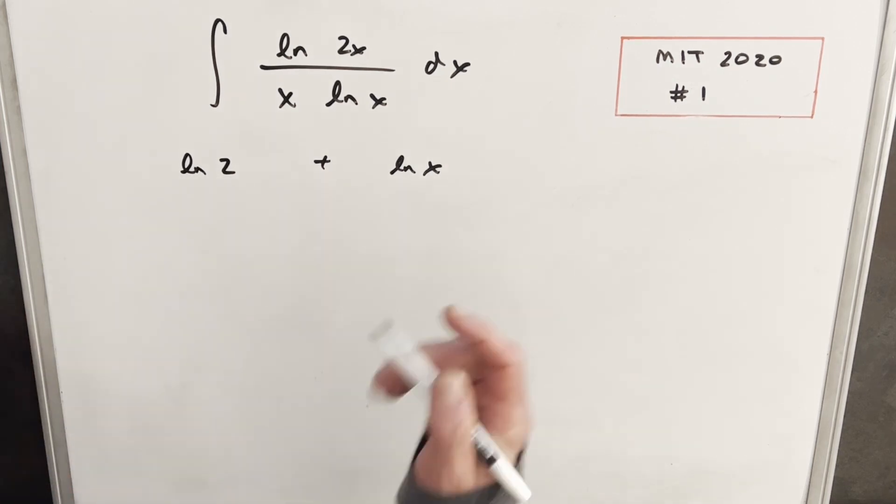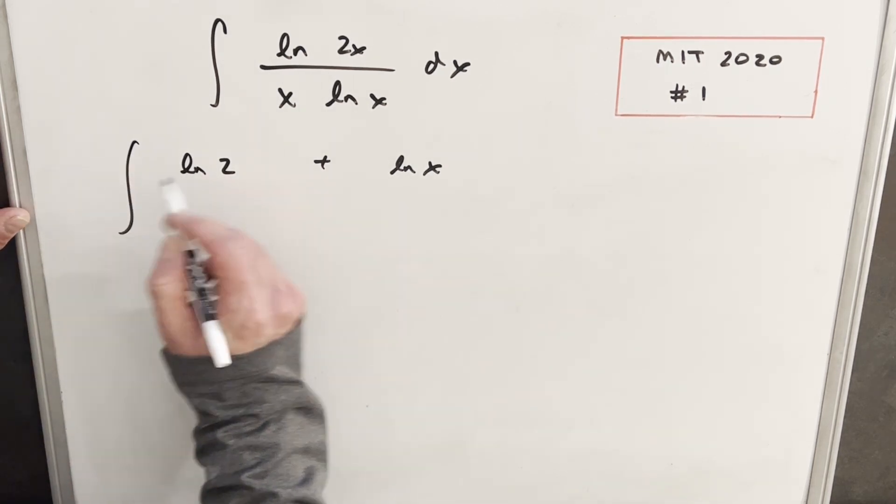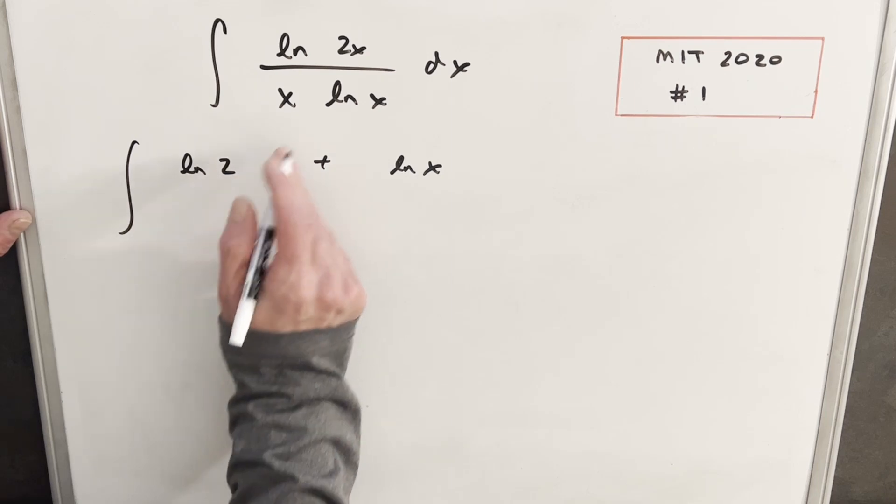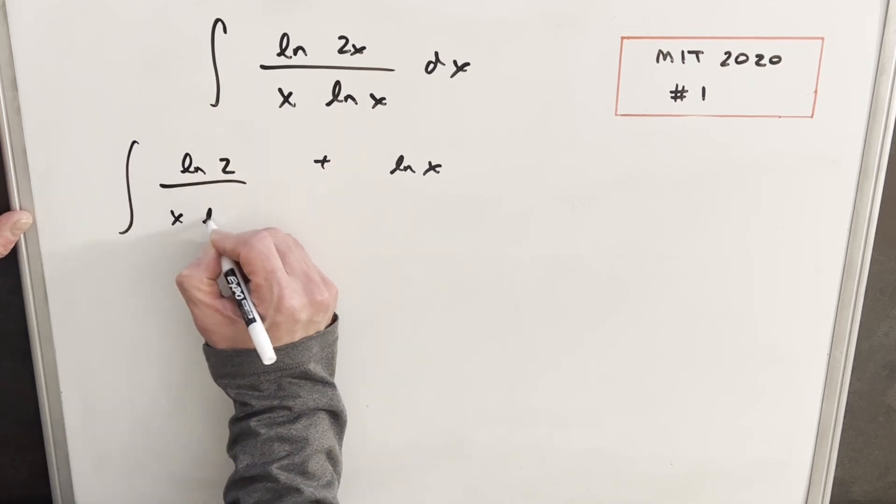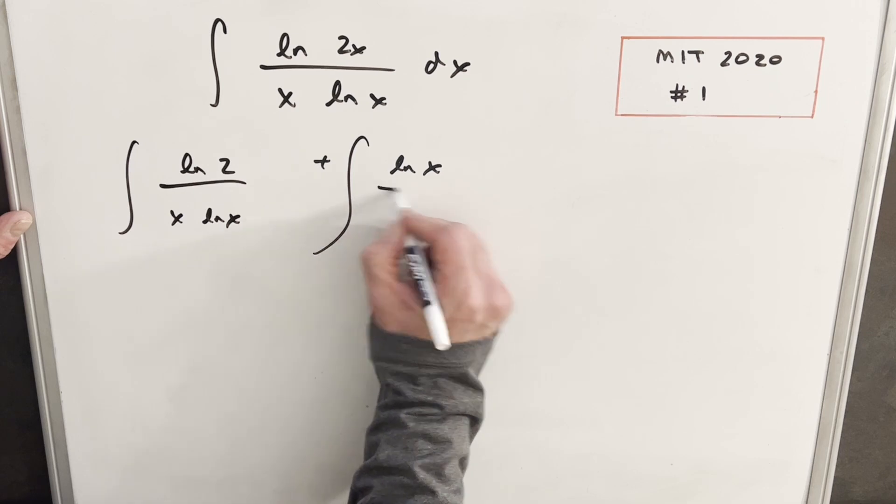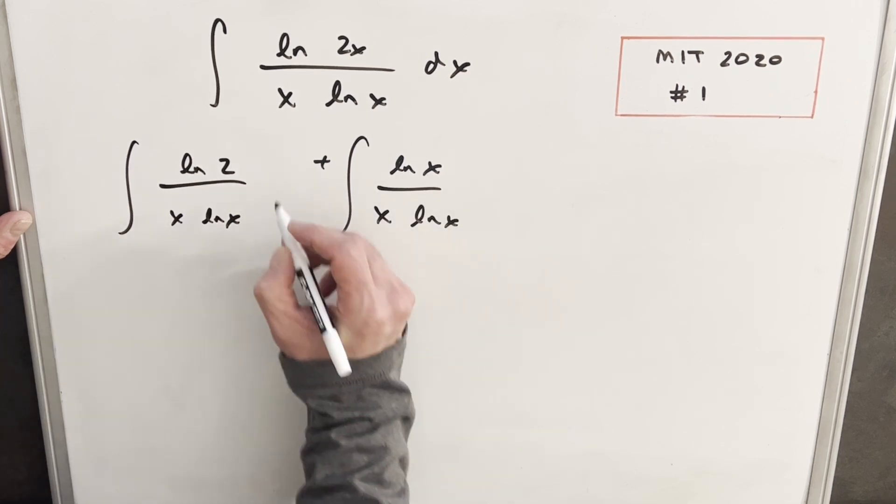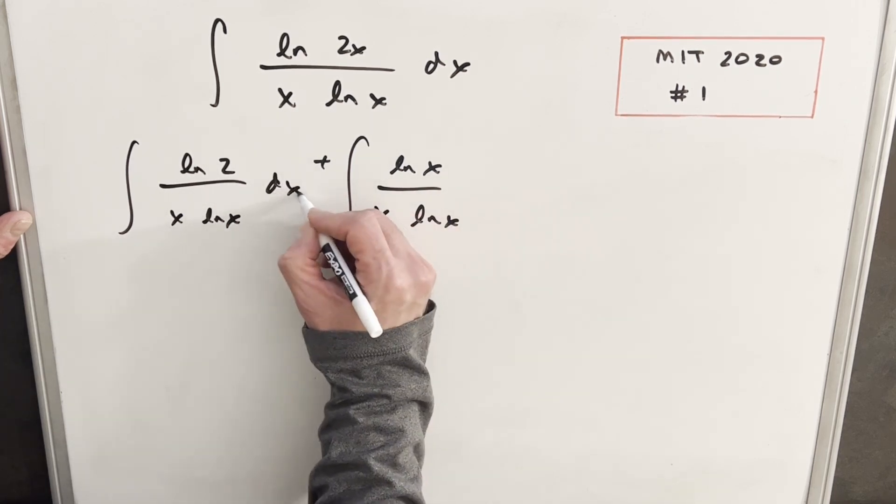I can write that as natural log of 2 plus natural log of x. I'm going to split this into 2 integrals. So for the first one, we'll have ln 2 over our denominator x ln x. And then over here, we'll have just our x ln x. Don't forget the dx in both cases.